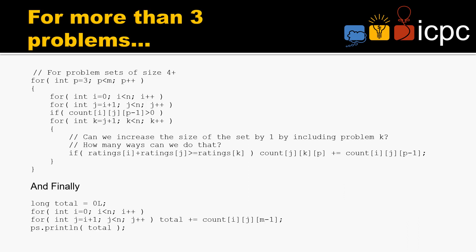For more than three problems, we're going to go through i, j, and k, but we don't need to do this if there are none in the previous problem count with i and j as the two largest. Can we increase the size of the set by one, including problem k? How many ways can we do that?